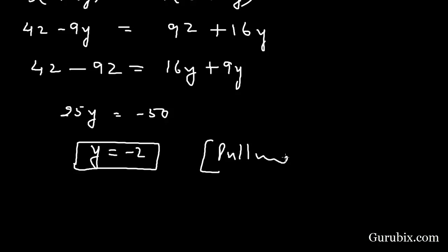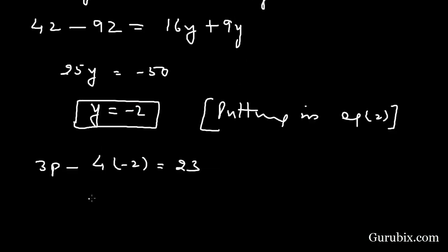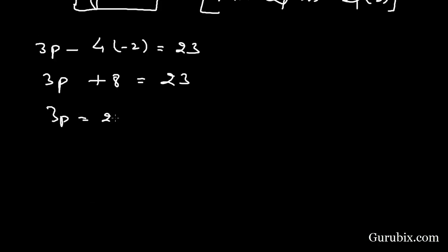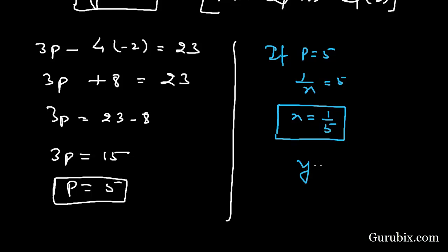Now we substitute y = -2 into equation number 2: 3p - 4(-2) = 23, so 3p + 8 = 23, meaning 3p = 15, and therefore p = 5. Since p = 1/x and p = 5, we get x = 1/5. The solution is x = 1/5 and y = -2. Thank you.